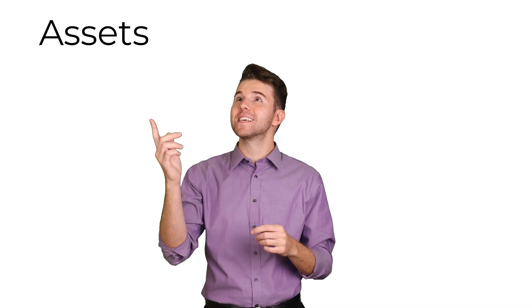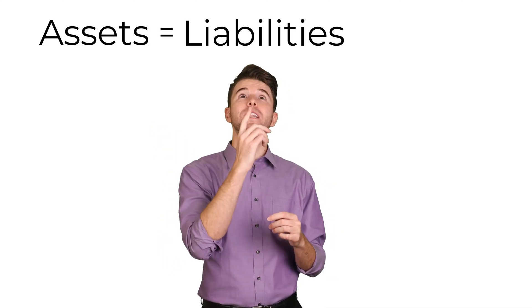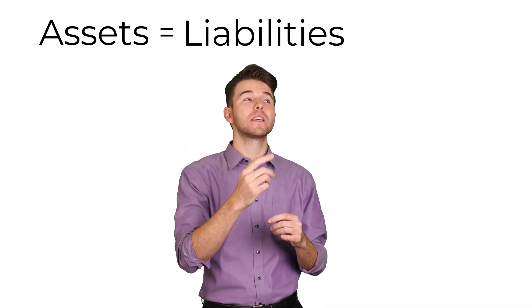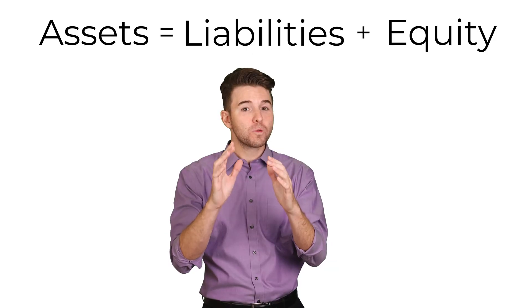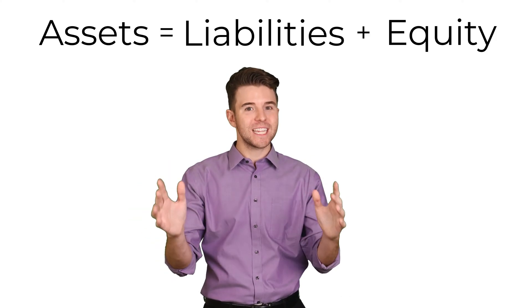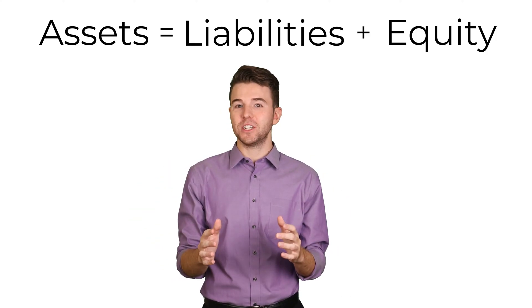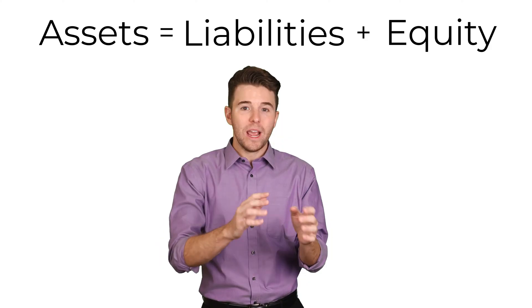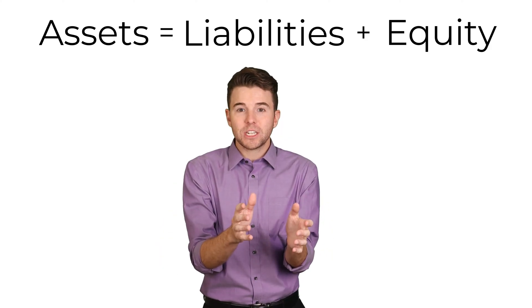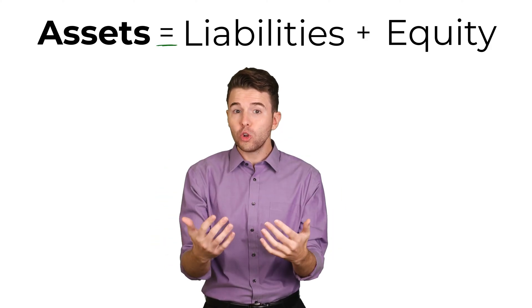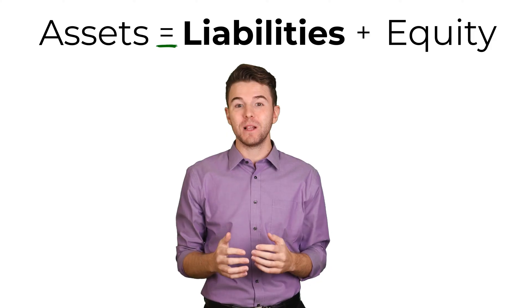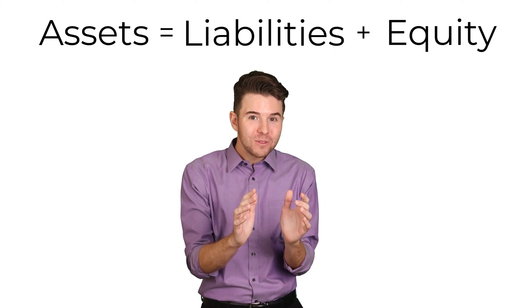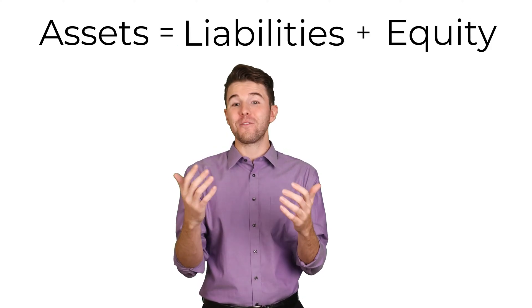The accounting equation is assets equals liabilities plus equity. This rule applies to every single transaction a company makes. So after each transaction, assets must always equal liabilities plus equity. If they don't, we have a problem.